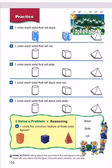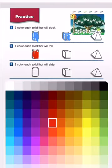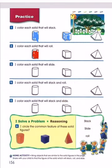Number two: which shape can roll? Color the shape that can roll. Of course, the cylinder can roll, so we color the cylinder. Number three: which shape can slide? Of course, the cylinder, cube, and the pyramid can all slide.